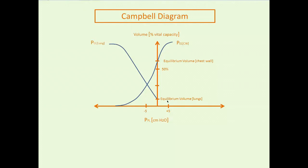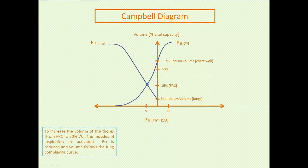If you were to increase intrathoracic pressure above atmospheric pressure, you would simply collapse the airways and the volume would not be expelled. The equilibrium volume of the chest wall is actually much higher than functional residual capacity. So to get to FRC, the lungs are actually expanded a little and the chest wall is actually compressed a little. That means when you see surgeons cut open the sternum for bypass surgery, you'll see the chest wall expand outwards towards its equilibrium volume, and the lungs recoil inwards towards their equilibrium volume.